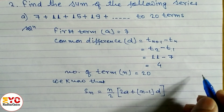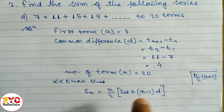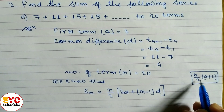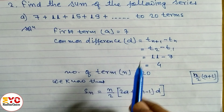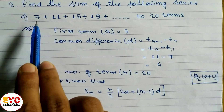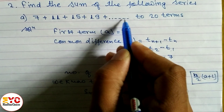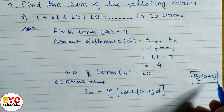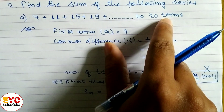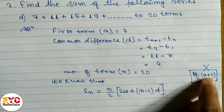The other formula is S_n = n/2 × (a + l). We have n = 20, a = 7, and d = 4 — all values are given. However, l (the last term) is not given, so we cannot use the second formula. We use S_n = n/2 × (2a + (n−1)d).